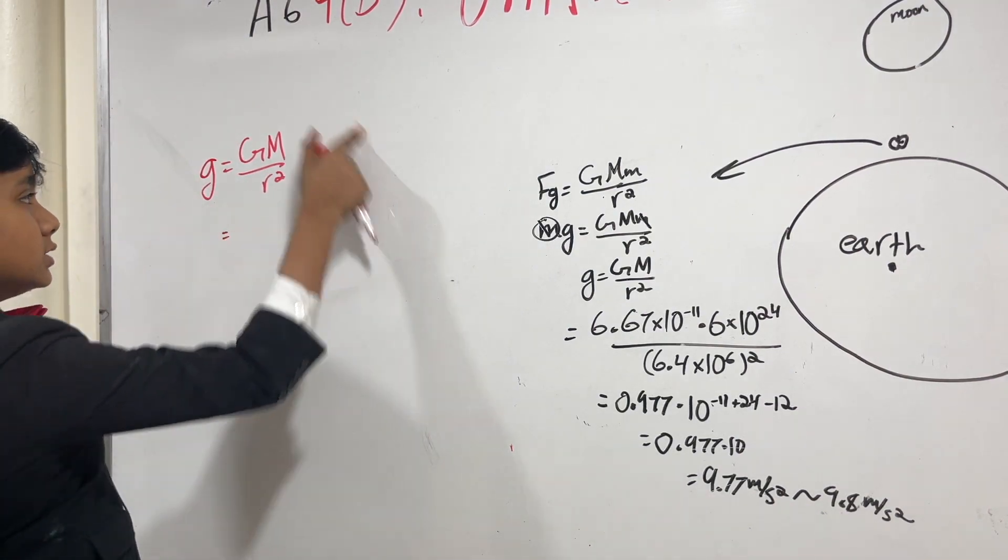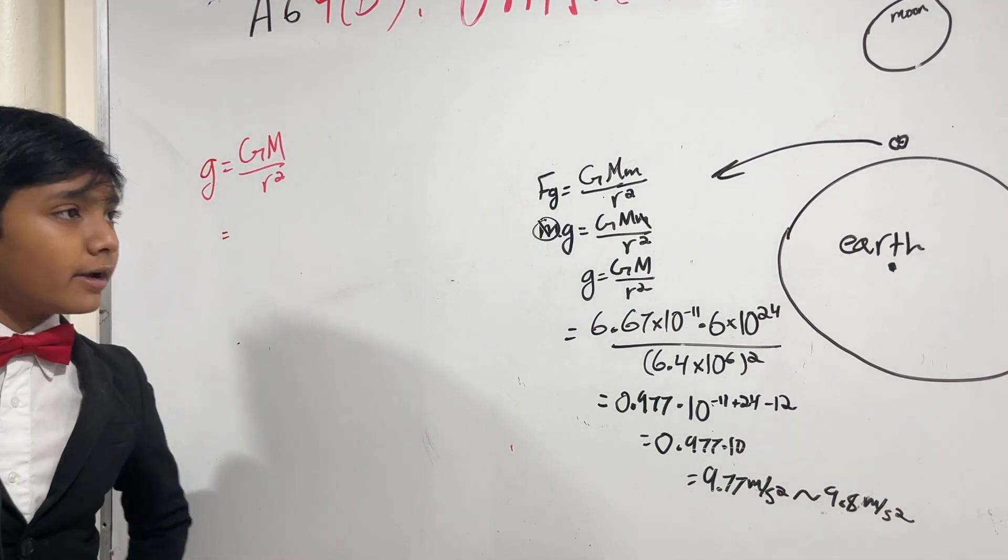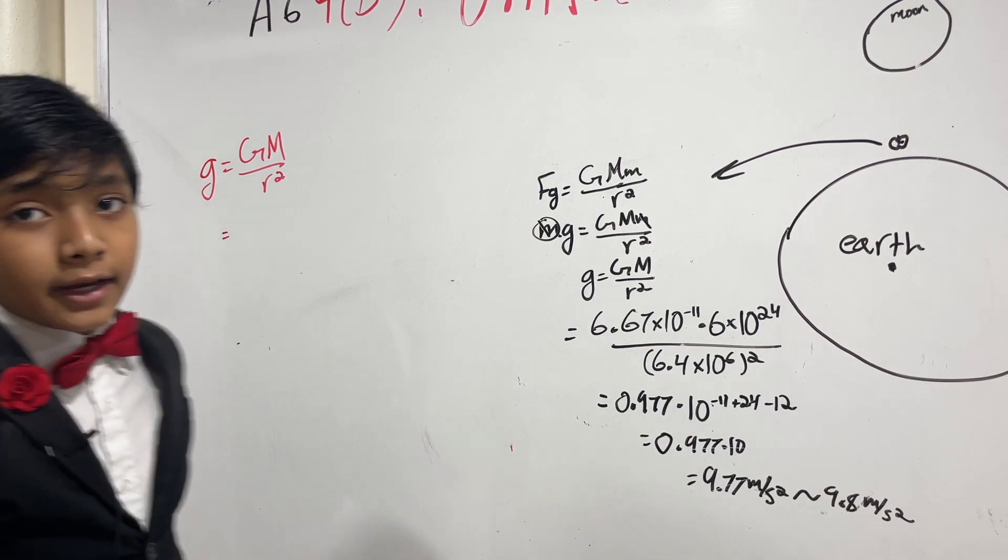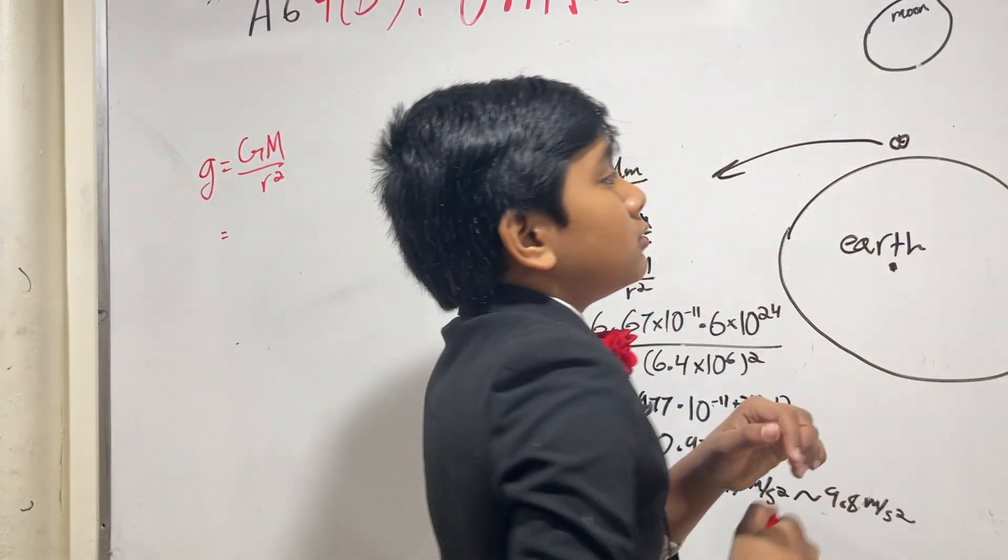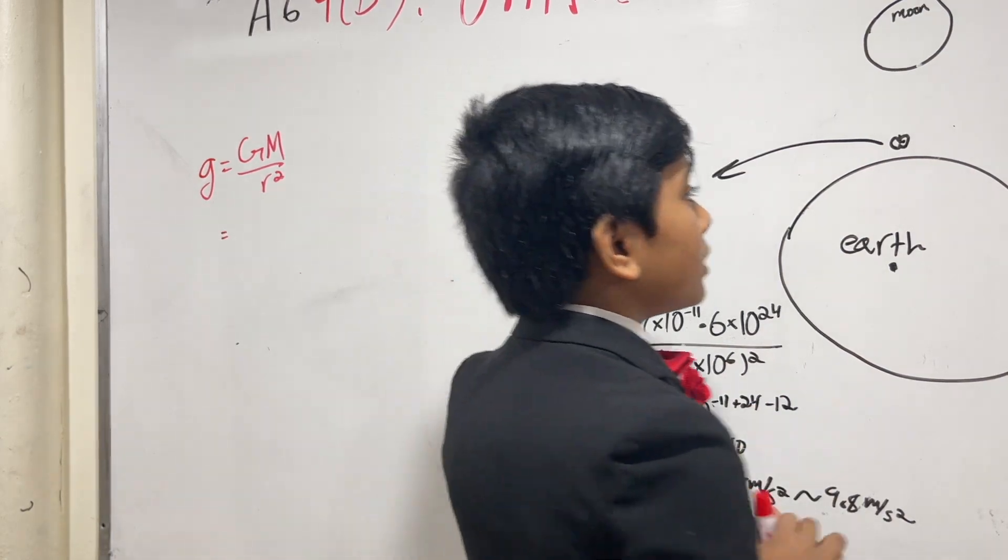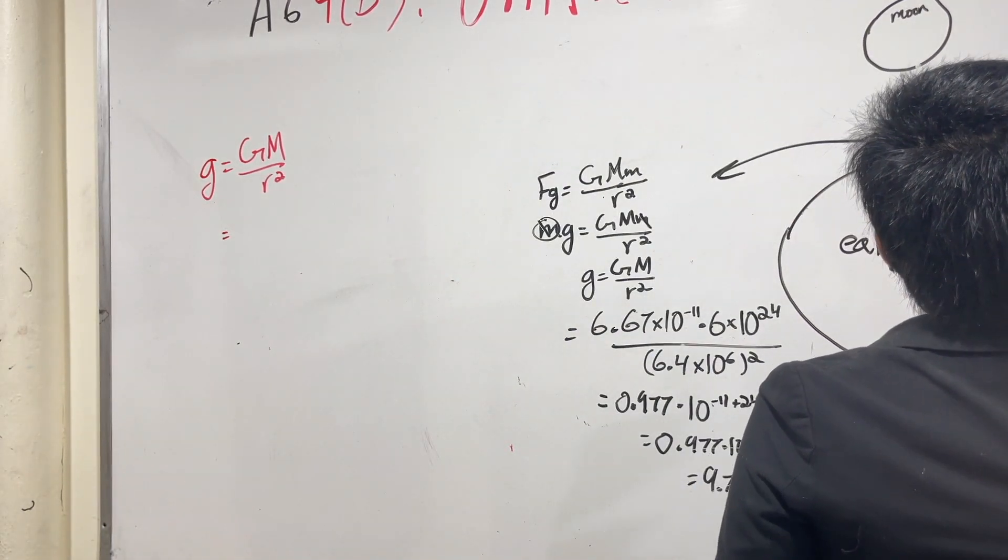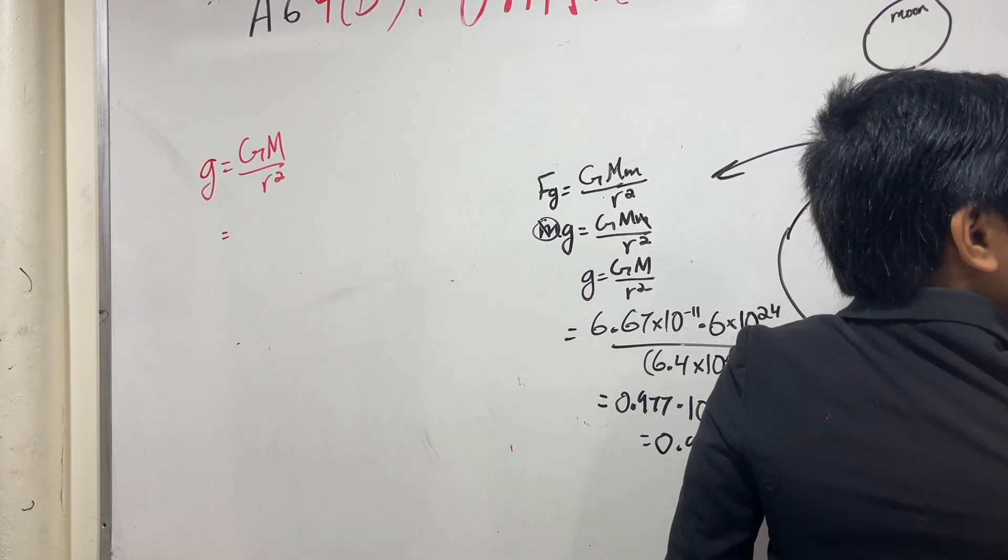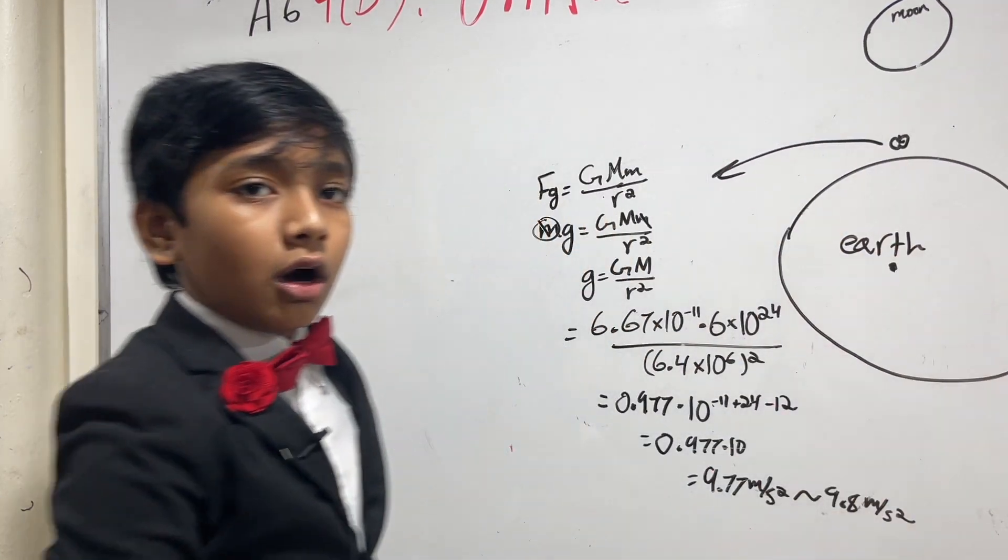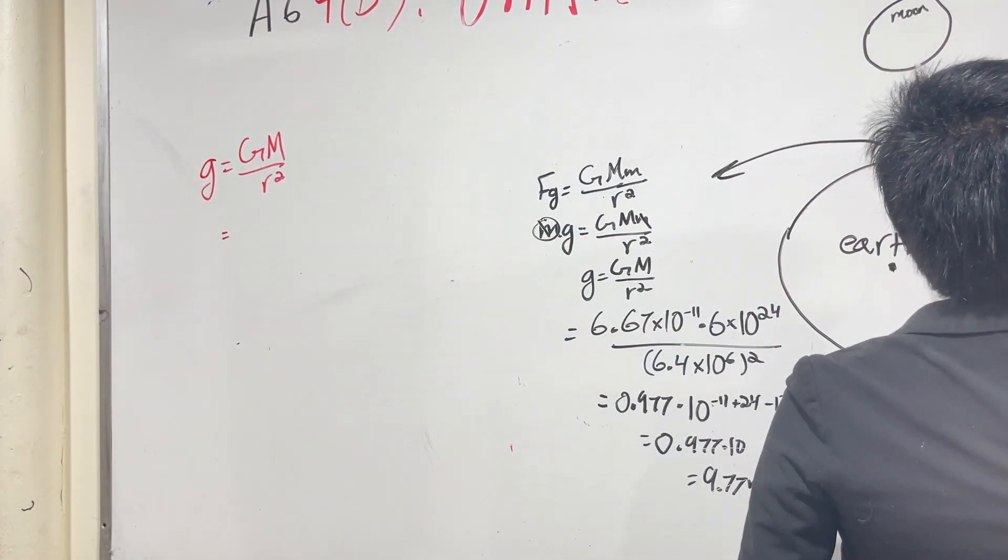Alright, so we're going to use g equals GM over r squared again. And if you didn't know, the distance from surface to surface, moon to earth, is 384,000 kilometers, which when converted to meters, 3.84 times 10 to the 8th meters. So let's express that in scientific notation.